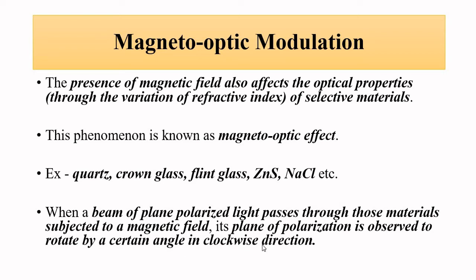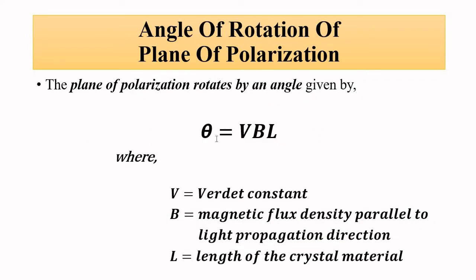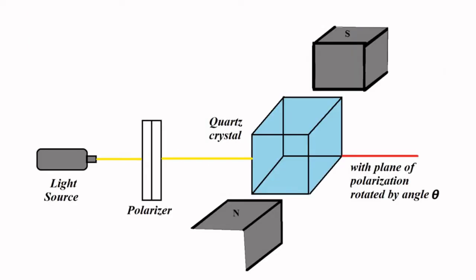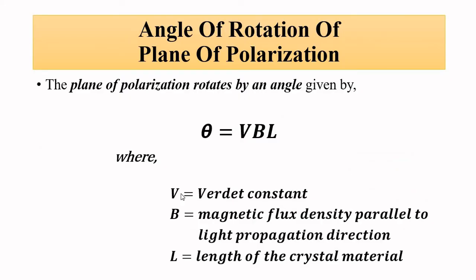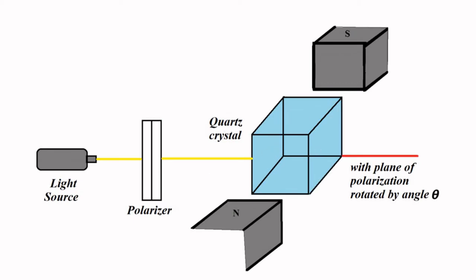The angle of rotation of the plane of polarization in the clockwise direction is given by the equation: θ = VBL, where θ is the angle of rotation, V is the Verdet constant (V-E-R-D-E-T), B is the magnetic flux density which is parallel to the direction of propagation of light, and L is the length of the crystal material used in the setup.